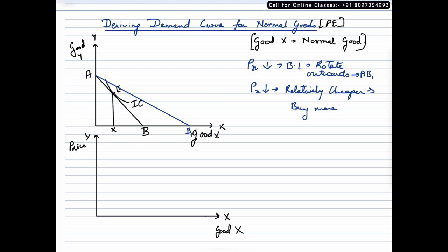more of this commodity, more of good X. And in that case, let us say the consumer is on this particular equilibrium. Let me just draw the IC curve first. So let us say the consumer is now on